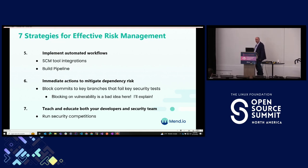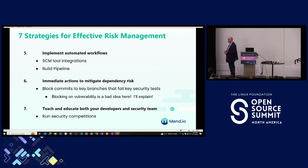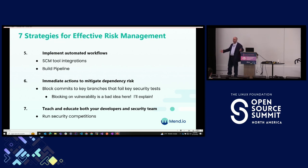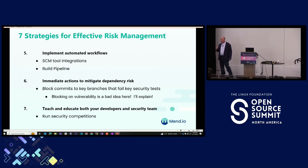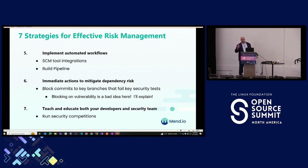Implement automated workflows. You're never going to run a good program without automation — without it, you might as well just give up. You cannot scale yourself to cover an entire company. Focus on automation: work your pipeline and your automation for SCM. I commit code, it kicks off a scan, I do a build, it goes through the build, I get the results. Do not block your developers, and do not block a branch based on a vulnerability.